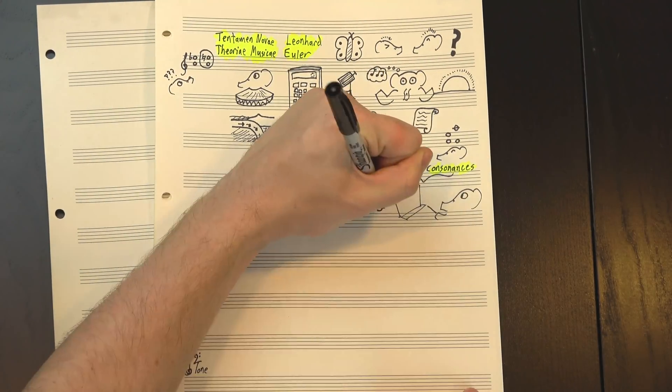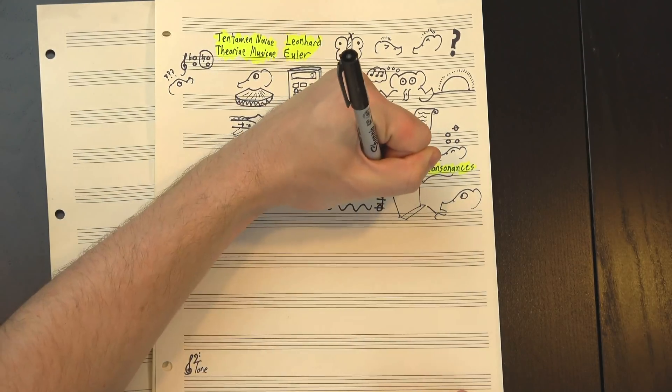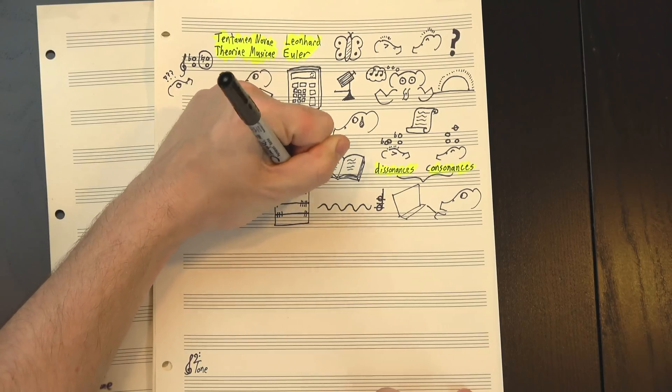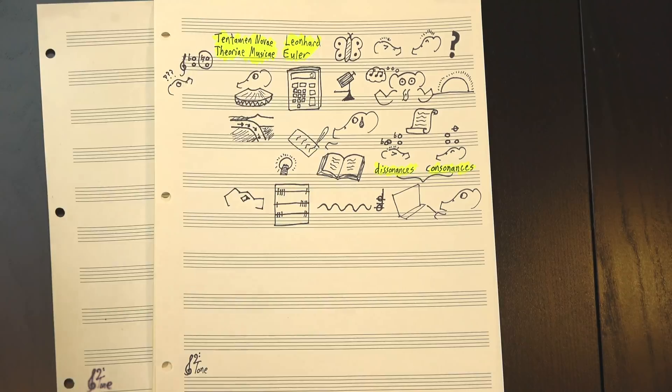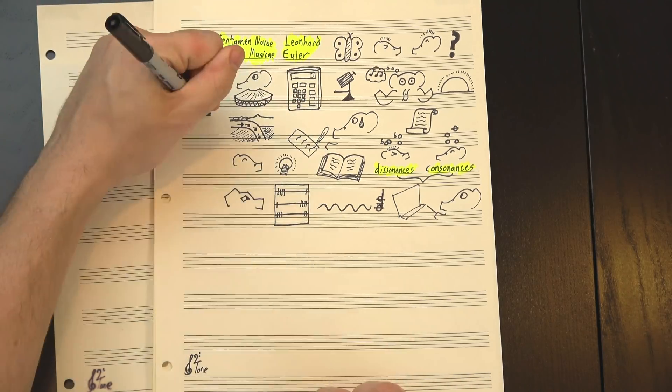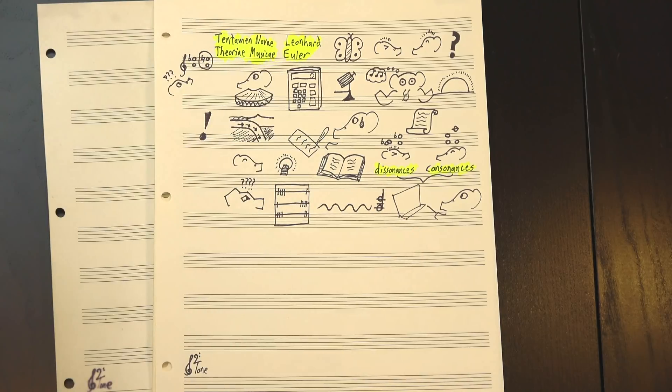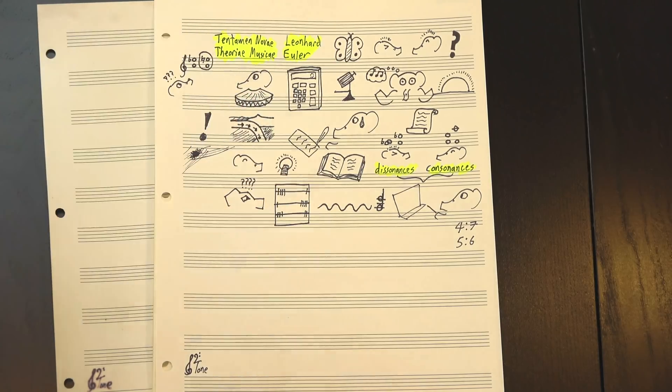First, though, a little background. When you hear a note, what you're really hearing is a sound wave with a specific frequency, and when you hear two notes together, your ear effectively calculates the ratio between the two in order to determine the interval. As a general rule, the simpler that ratio is, the more consonant the interval will sound. But that's not really an answer, because it's not clear what it means to be simple. I mean, which is more consonant, 5 to 6 or 4 to 7? It's hard to say, which means we're gonna need a better definition.